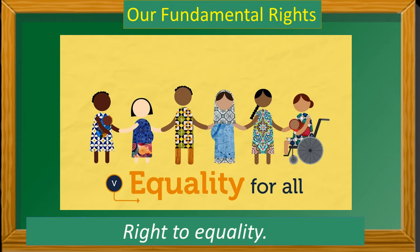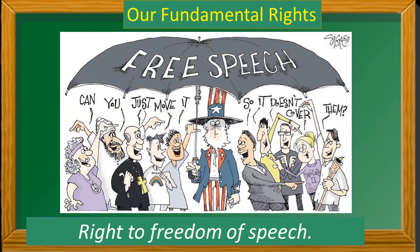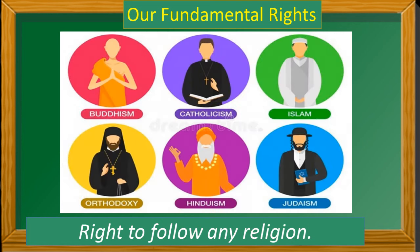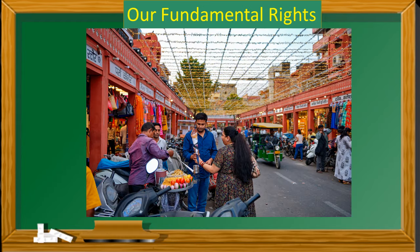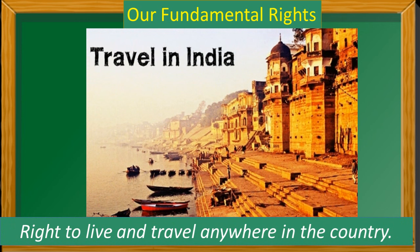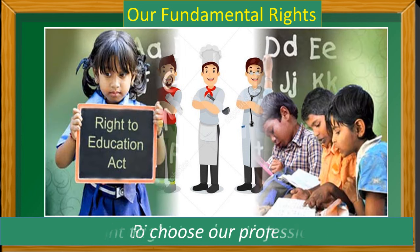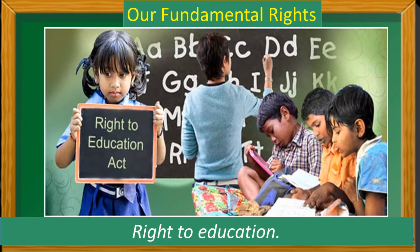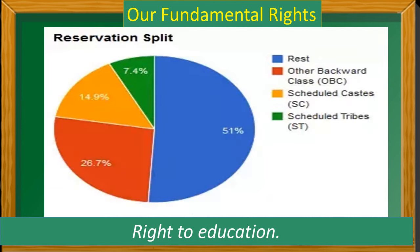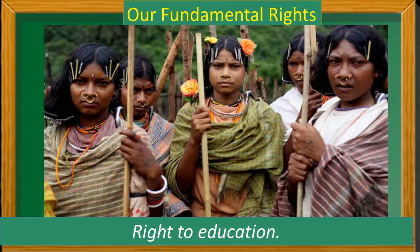Right to equality — everyone is equal. Right to freedom of speech — we can speak freely without fear. Right to follow any religion. Right to justice. Right to live and travel anywhere in the country. Right to choose our profession. Right to free and compulsory education for all children up to the age of 14. However, these rights are not absolute and the government may take certain measures, like reserving jobs or seats in colleges for the backward and poorer sections of society, for their upliftment.